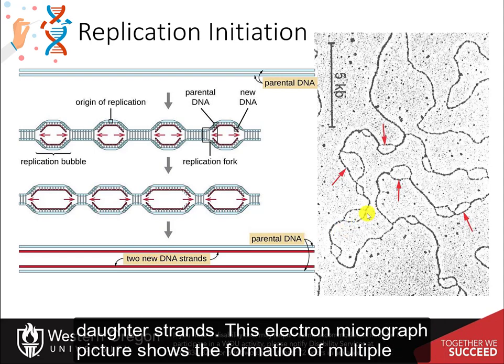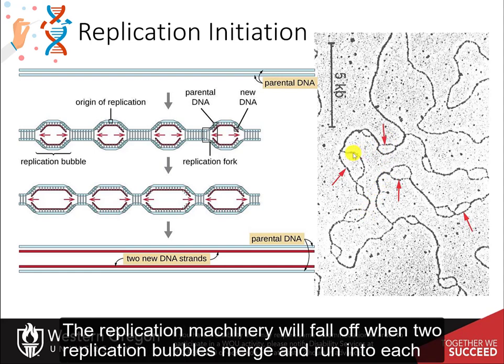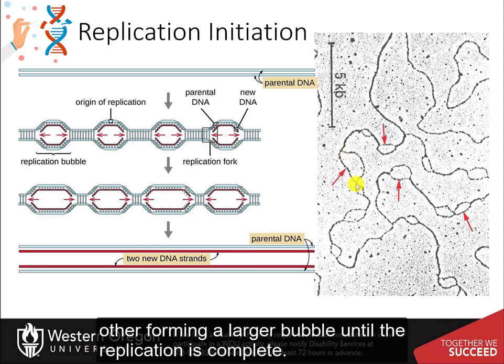This electron micrograph picture shows the formation of multiple replication bubbles along a replicating chromosome. The replication machinery will fall off when two replication bubbles merge and run into each other, forming a larger bubble until the replication is complete.